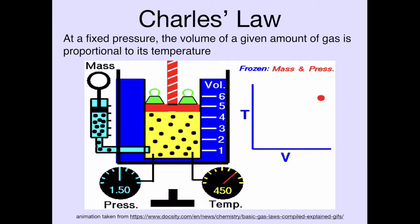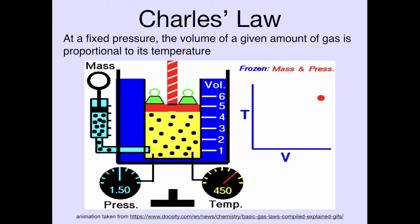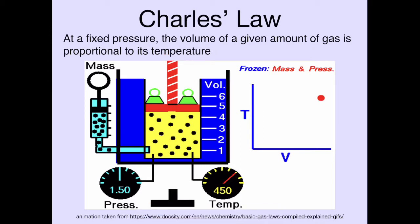In addition to Celsius and Fahrenheit, we also have the Kelvin scale. To explain how it works, I'll give a little historical background starting with Charles's Law. Charles's Law relates the volume and the temperature of a gas at a fixed pressure. Imagine a container of gas sealed in a piston with weights on top to keep the pressure constant. The amount of gas also stays the same. We can heat the gas up, and since the piston is movable, that leads to a change in volume.